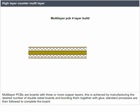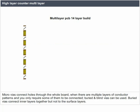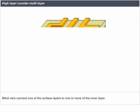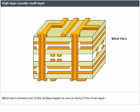High-layer count multi-layer: multi-layer PCBs are boards with three or more copper layers, achieved by manufacturing the desired number of double-sided boards and bonding them together with glue. Standard processes are then followed to complete the board. Microvias connect holes through the whole board. When multiple layers of conductor patterns are present and only some need to be connected, buried and blind vias can be used. Buried vias connect inner layers together but not to the surface layers; blind vias connect a surface layer to one or more inner layers.